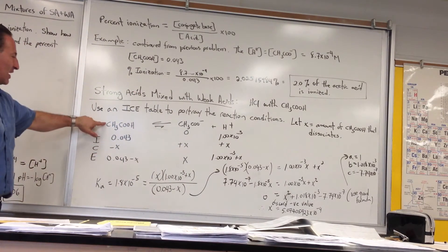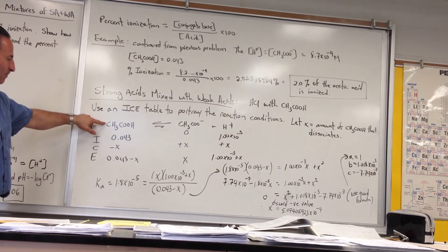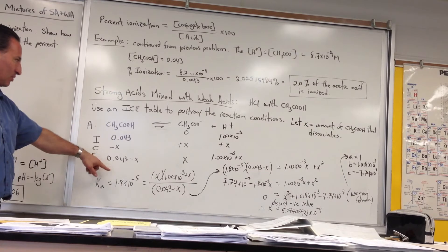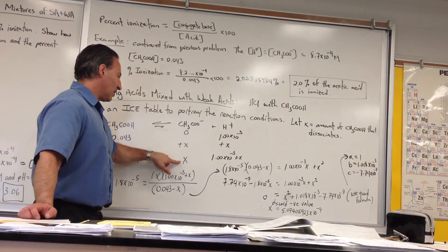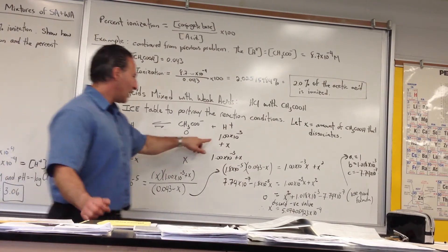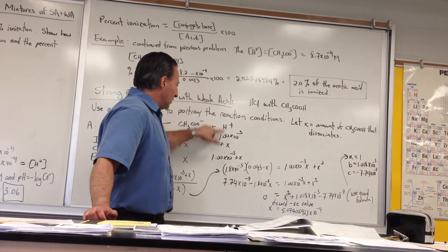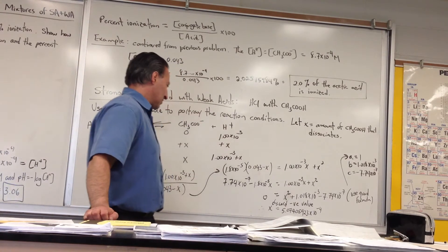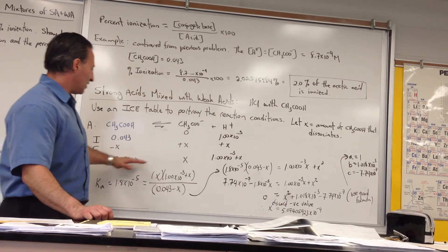The acetate concentration at the outset is 0, but we're starting with an initial H⁺ concentration of 1.0×10⁻³. A certain amount X of this acid now dissociates, which subtracts X from the 0.043. X of acetate ion appears, and X H⁺ is added to the original 1.0×10⁻³. So at equilibrium, we have these conditions.